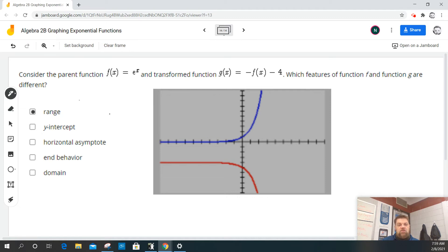Well, the range is certainly different, right? The y-intercept is certainly different. The horizontal asymptote is certainly different. And the end behavior is different.